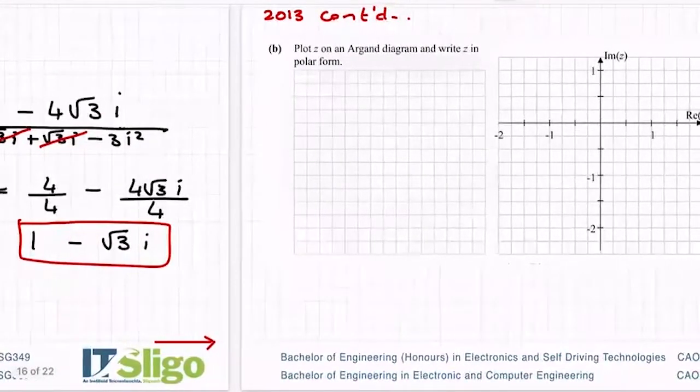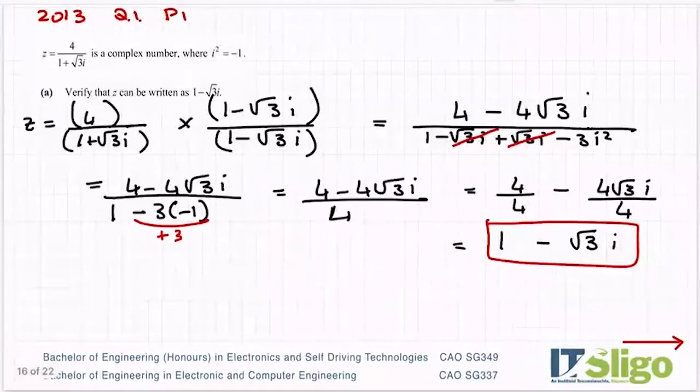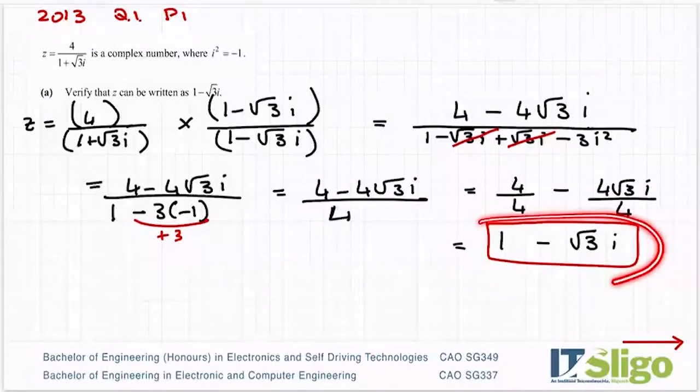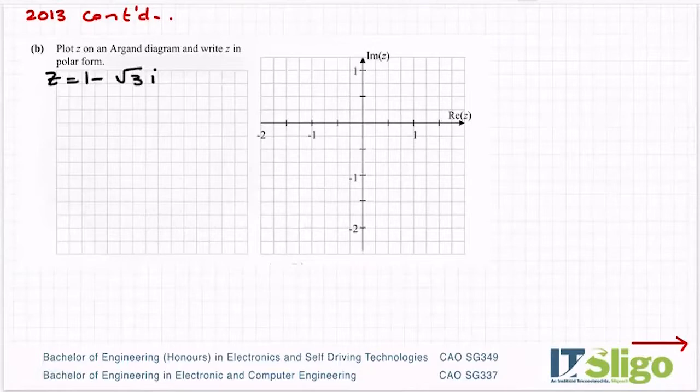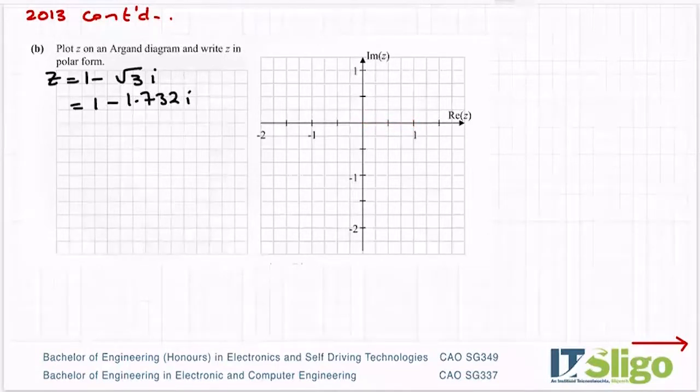Plot z on an Argand diagram and write z in polar form. So obviously, this is the one that we're going to plot. So z equals 1 minus root 3i. So onto my calculator, I'm putting root 3 so I can decimalize that and try and plot it. So root 3 is like that and that is only to allow me to plot it.